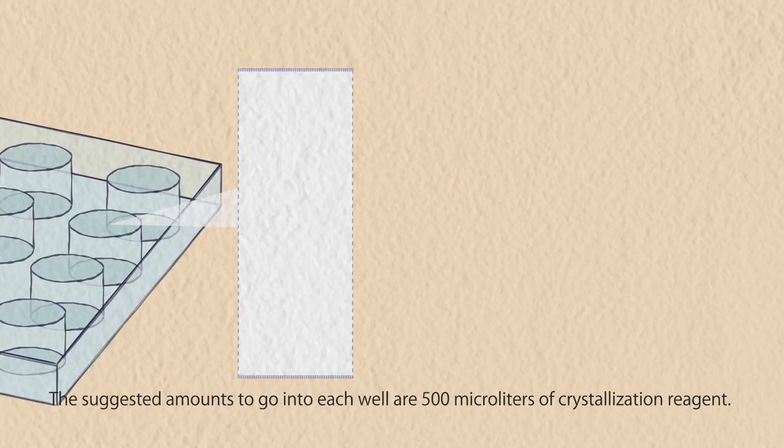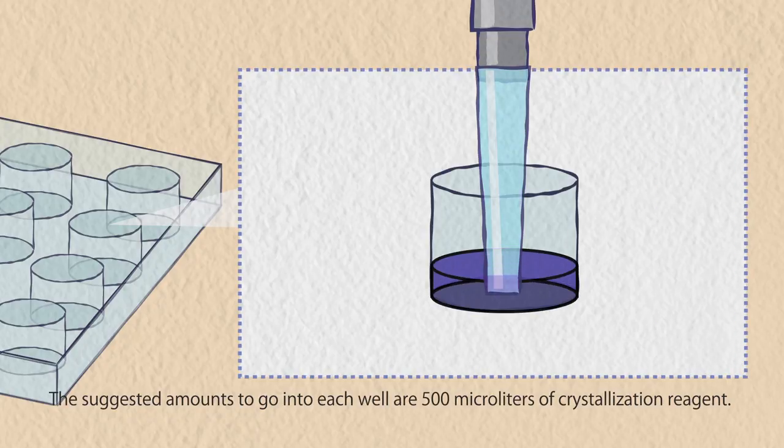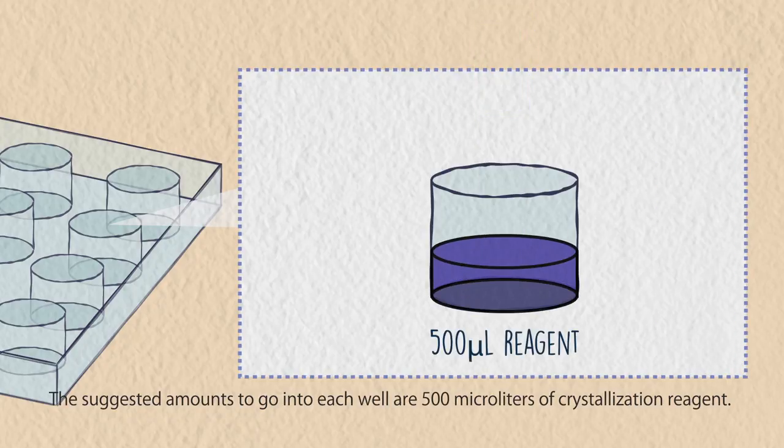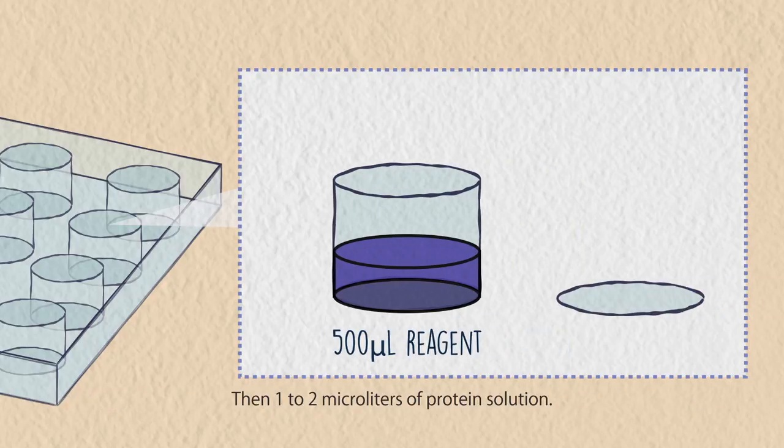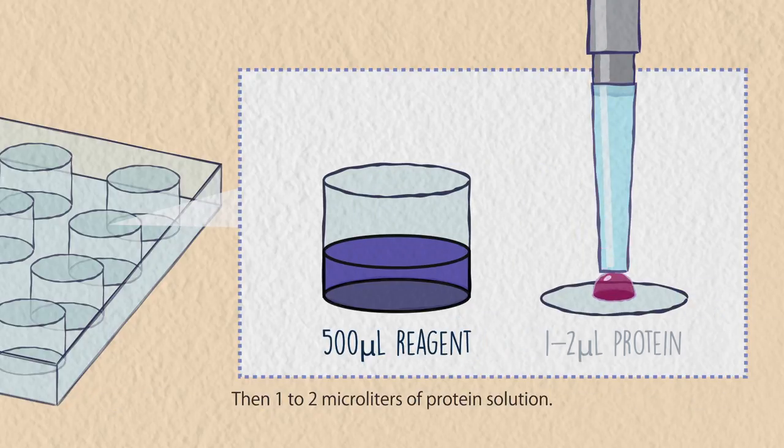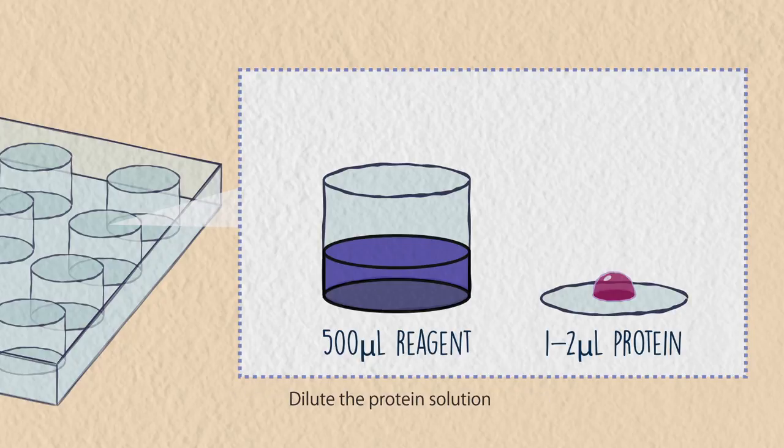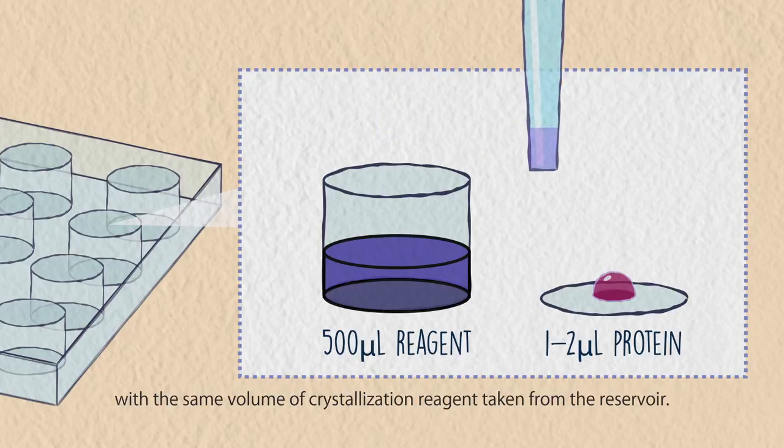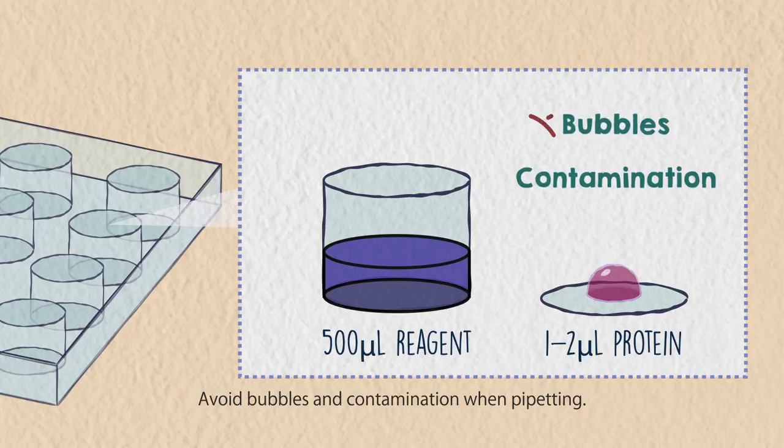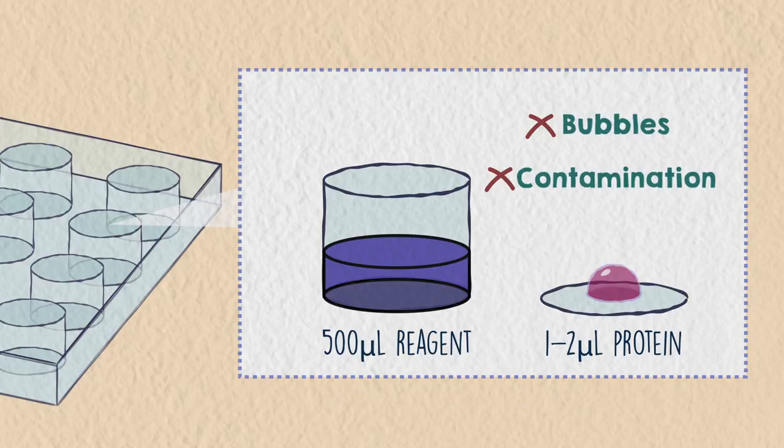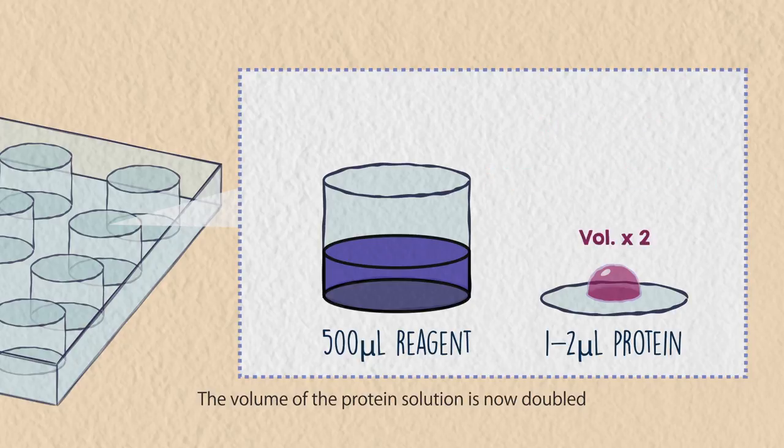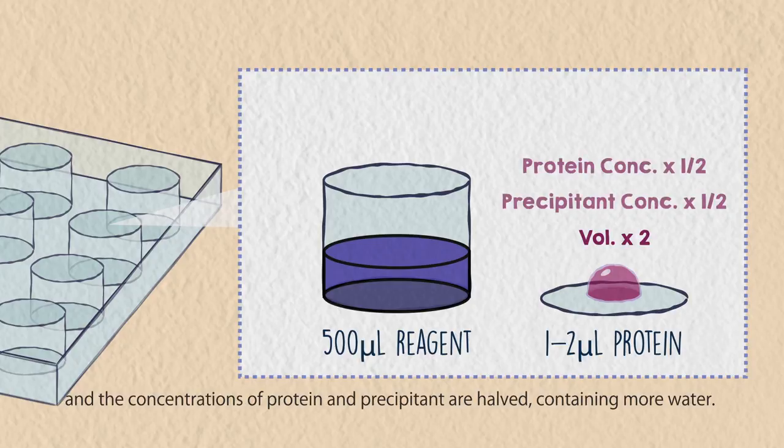The suggested amounts to go into each well are 500 microliters of crystallization reagent, then 1 to 2 microliters of protein solution. Dilute the protein solution with the same volume of crystallization reagent taken from the reservoir. Avoid bubbles and contamination when pipetting. The volume of the protein solution is now doubled and the concentrations of protein and precipitant are halved, containing more water.